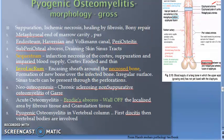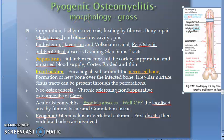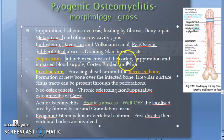Let's quickly revise the morphology of pyogenic osteomyelitis. First, in the metaphyseal ends in the marrow cavity, pus accumulates. Then pressure and tension increase, the endosteum gets involved via the Haversian and Volkmann canals in the compact bone, and then periostitis occurs. A subperiosteal abscess can form with draining tracts from the skin. Sequestrum is the infarction necrosis of the cortex due to suppuration and impaired blood supply. Involucrum is an encasing sheath of new bone around this necrosed bone.